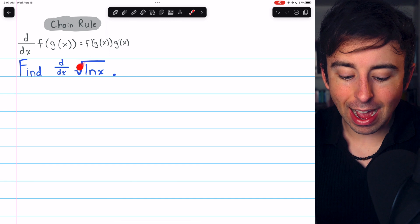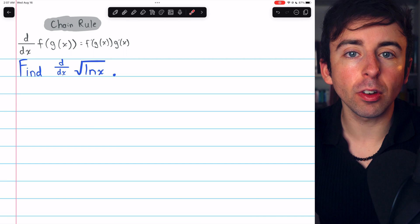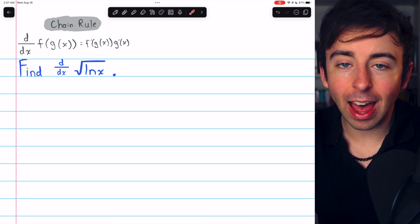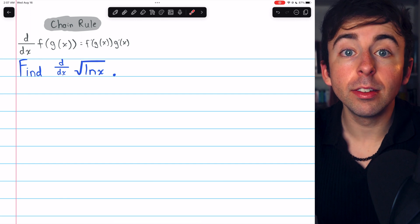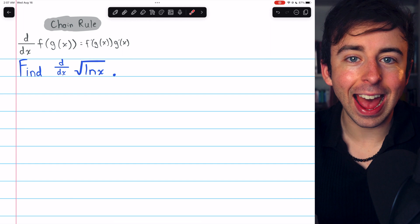Now we need to know what the outside function, the f of x, and the inside function, the g of x are. In this case, the natural log is inside the square root. So f of x is square root of x and g of x is ln x.